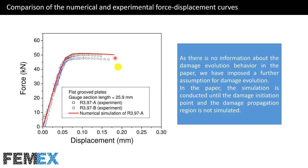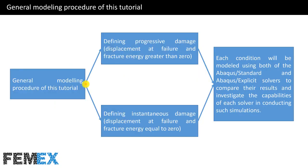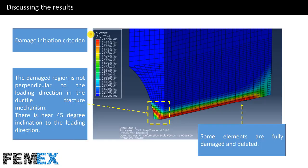As there is no information about the damage evolution behavior in the paper, we have imposed a further assumption for damage evolution. In the paper, the simulation is conducted until the damage initiation point, and the damage propagation region is not simulated. In this tutorial, we will define progressive damage and instantaneous damage in separate models, and each condition will be modeled using both Abacus Standard and Abacus Explicit solvers to compare their results and investigate the capabilities of each solver in conducting such simulations.